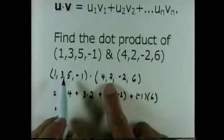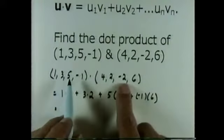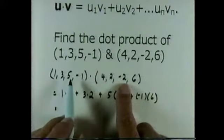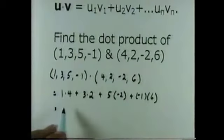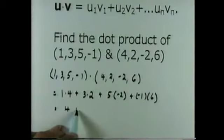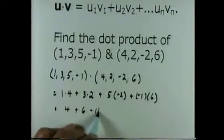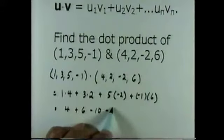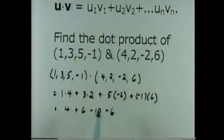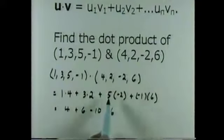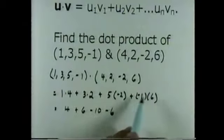1, 3, 5, negative 1 dot 4, 2, negative 2, 6 equals 1 times 4 plus 3 times 2 plus 5 times negative 2 plus negative 1 times 6, which is 4 plus 6 minus 10 minus 6. 1 times 4 is 4, 3 times 2 is 6, 5 times negative 2 is negative 10, negative 1 times 6 is negative 6.